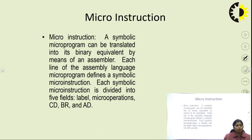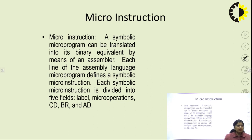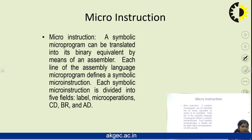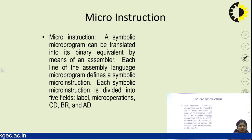Micro instructions are a collection of micro code. A micro instruction is a symbolic micro program that can be translated into its binary equivalent by means of an assembler. Each line of assembly language is defined as a symbolic micro instruction. In a micro program there are different micro instructions such as CD (condition), BR (branch), and AD (address) fields.